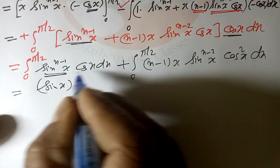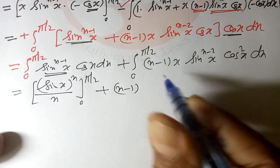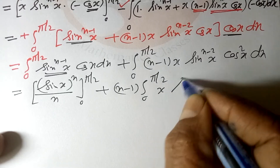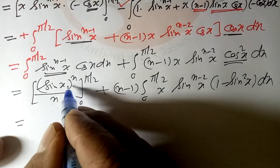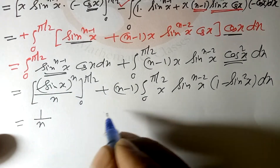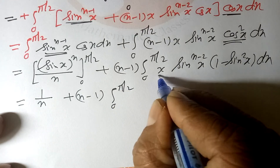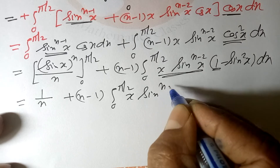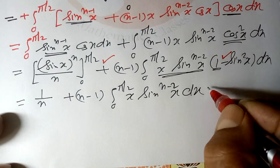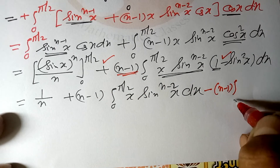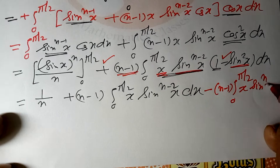The first integral gives [sin^(n-1+1)(x)/(n-1+1)]₀^(π/2) = 1/n. The second integral has cos²(x) = 1 - sin²(x), so we get (n-1)∫₀^(π/2) x·sin^(n-2)(x) dx minus (n-1)∫₀^(π/2) x·sin^n(x) dx.